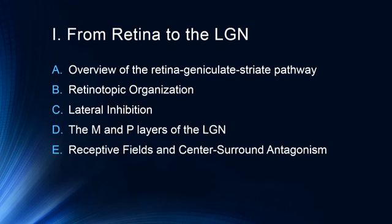We'll talk about the concept of lateral inhibition, an important part of our ability to discern things like contrast. We'll talk about the M and P layers of the lateral geniculate nucleus, which are the magnocellular and parvocellular layers of the LGN. And finally, we'll talk about receptive fields and center-surround antagonism.